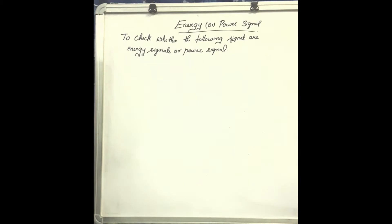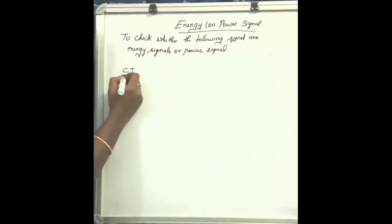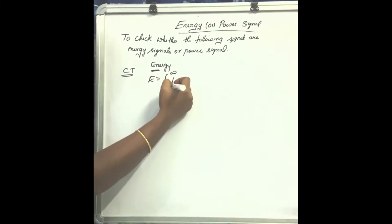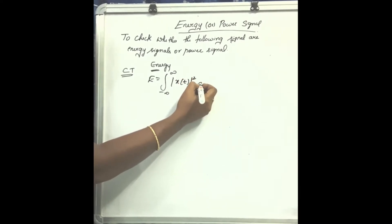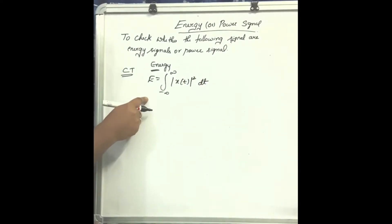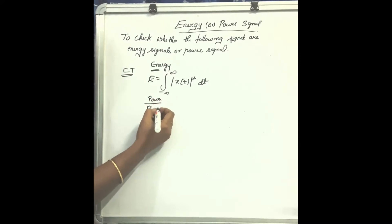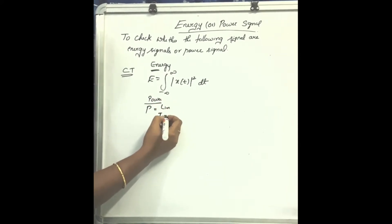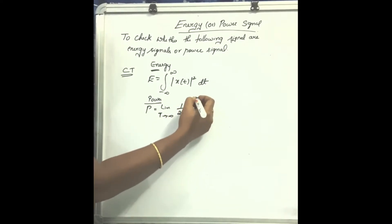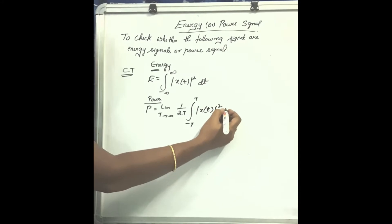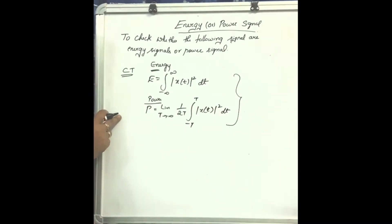To check whether the following signals are energy or power signals, the conditions for continuous time (CT) signals are: for energy, E is equal to the integral from minus infinity to infinity of x(t) whole square dt. For power, P is equal to limit t tends to infinity of 1 by 2t, integral from minus t to t of x(t) whole square dt.